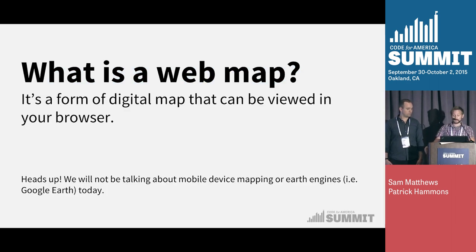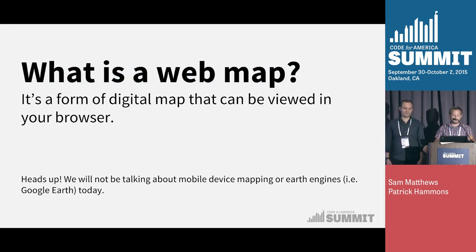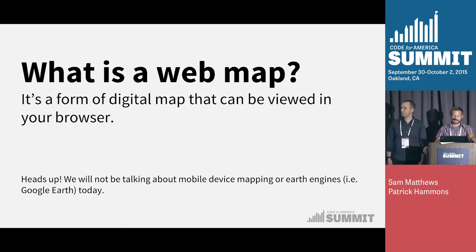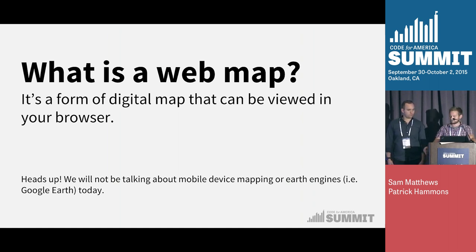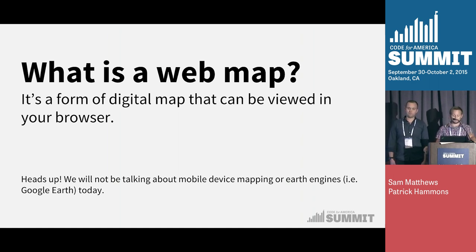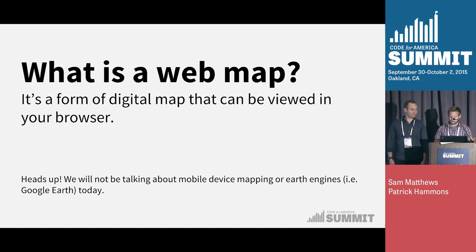So what is a web map? It's a map that's on your browser — it's digital and you can look at it usually from anywhere in the world. We're not going to be talking about Earth engines such as Google Earth today, nor mobile device mapping such as collecting data.